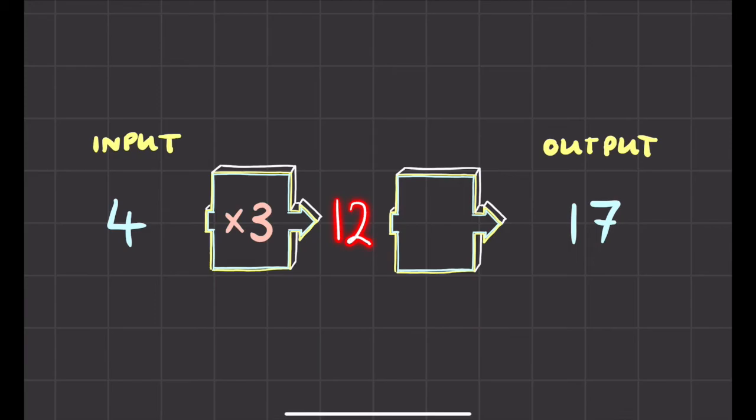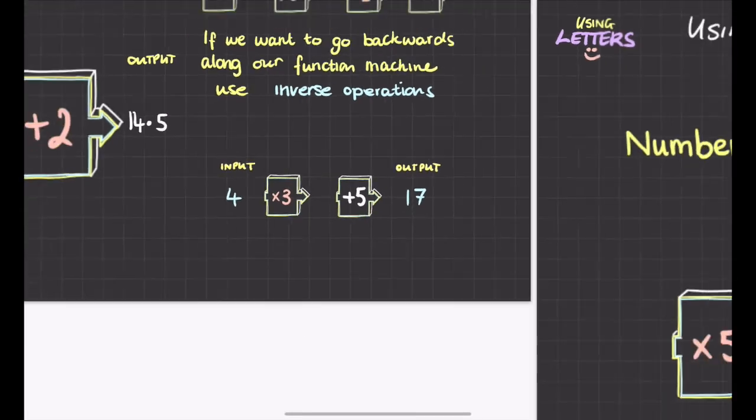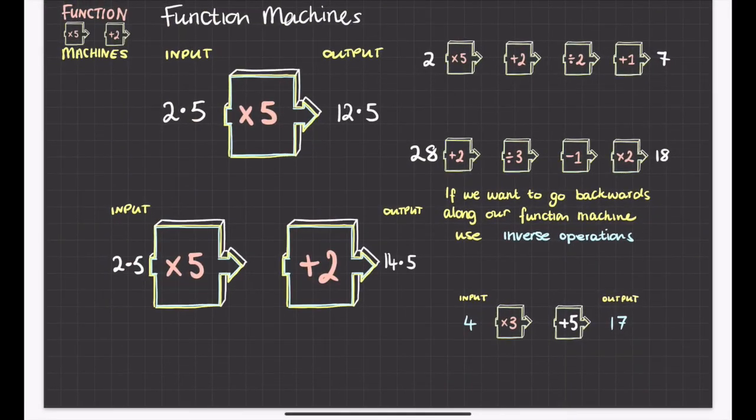And then what do we need to do to 12 to make it 17? Maybe you can spot that already. And one of the things you could do is you could add on 5. So I'm going to pop into this box here add 5, and I've completed my function machine there to make it work. And that is a quick look at function machines.